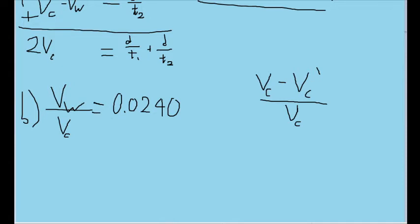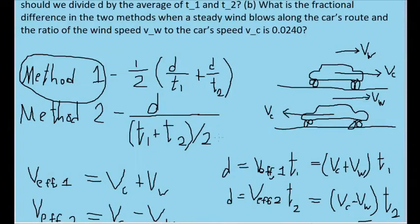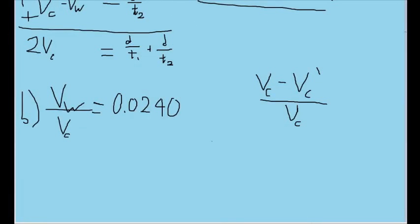In part b, we're given the ratio of the speed of the wind to the speed of the car as 0.0240. We're asked to find the fractional difference in the speeds we'd get for using both methods, which can be roughly written as v_c minus v_c prime, all over the actual speed of the car you'd measure.